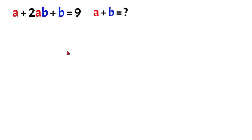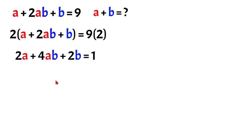So the first thing we're going to do is we're going to multiply both sides of this equation by 2. That will leave us with 2a plus 4ab plus 2b is equal to 18.